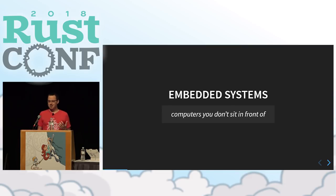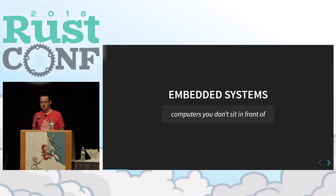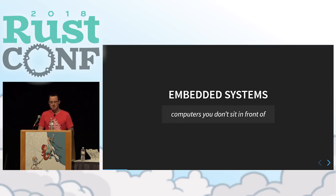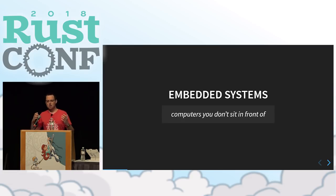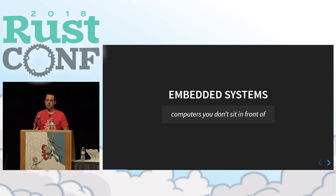I've been talking about embedded systems but haven't done a good job of defining them. My tongue-in-cheek description is: computers you don't sit in front of. This could be anything from the TV remote on your coffee table to the engine control system for a rocket, satellites, or electronics in airplanes — combinations of hardware and software designed to do one thing really well, not like a general-purpose computer.